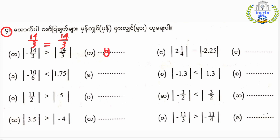The result is 1.75. We cannot express it differently — 1.75 simplifies to 7 over 4, which equals 1.75.